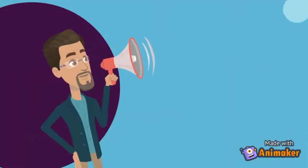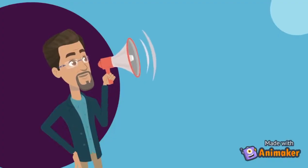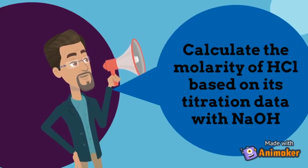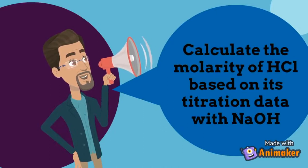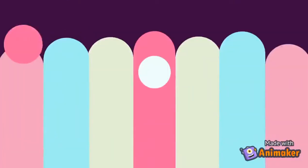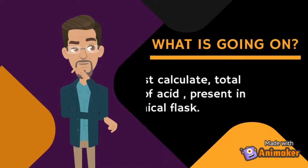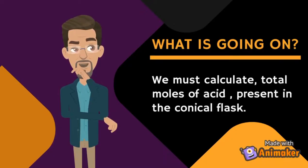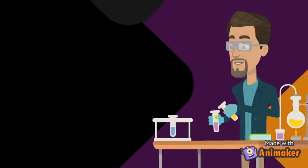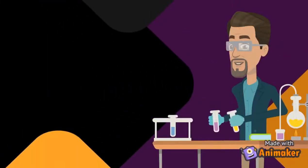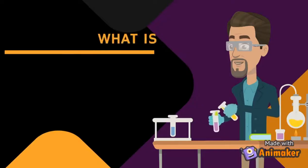In the first part of the experiment, we can calculate the concentration of hydrochloric acid based on the titration data. In part B, we will transfer 25 ml of the acid into a conical flask. Because we already calculated the concentration of the acid during part A, we can calculate the total moles of acid present in the conical flask. We will then put a piece of metal into that conical flask and let the metal fully dissolve by the acid.